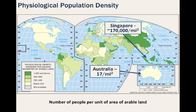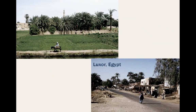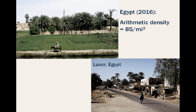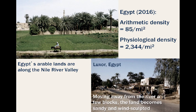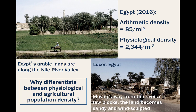But consider people of much more meager standards, such as those living in Egypt. Its arithmetic density is only around 85 people per square mile. However, the physiological density is among some of the highest in the world at over 2,000 people. With around 15% of their population devoted to agriculture, and with around 98% of the people concentrated around the Nile River and Delta, the physiological density gives us a much better picture of the constraints on the people of Egypt as opposed to those in Singapore.